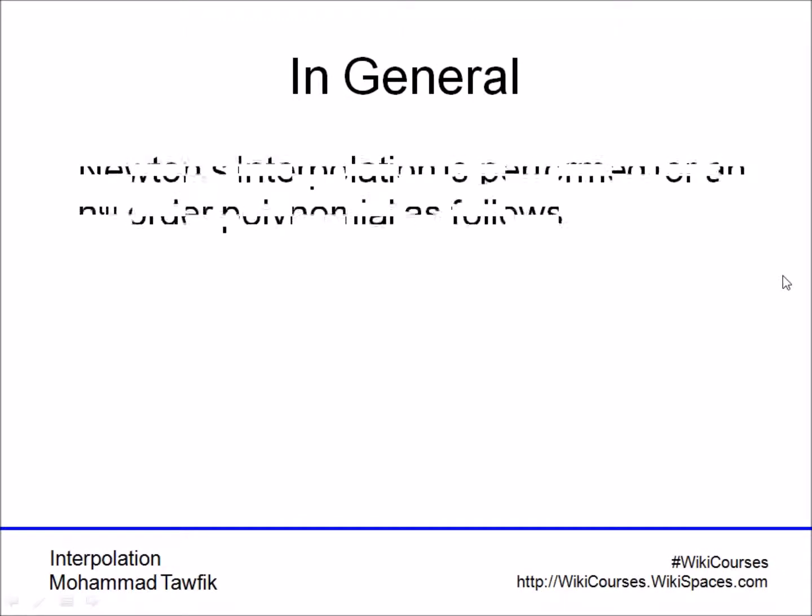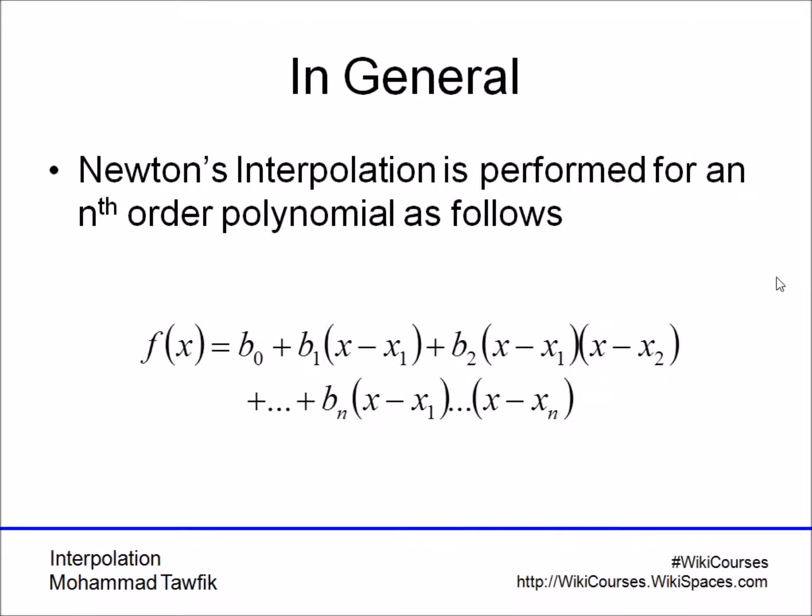So in general, Newton's interpolation method can be written in the form f of x equals b0 plus b1 x minus x1, b2 times x minus x1 times x minus x2, and so on.